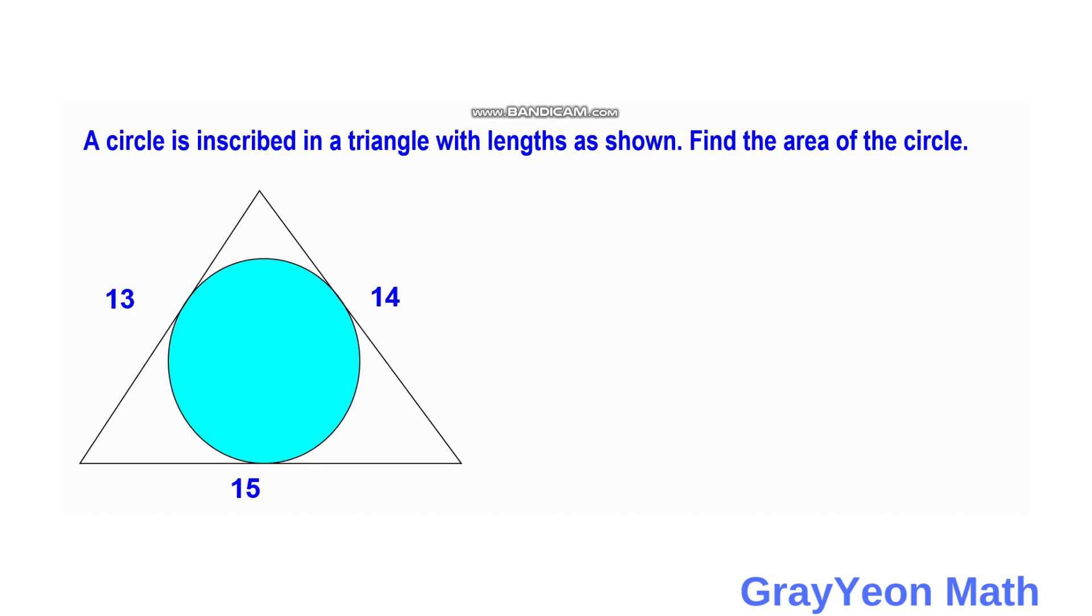So first thing that we need to do is get the area of this triangle by Heron's formula. But before we use Heron's formula, we have to get the semi-perimeter of this triangle.